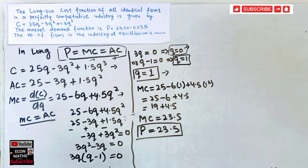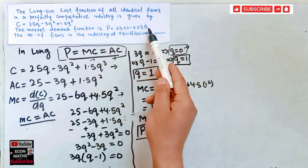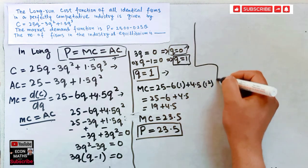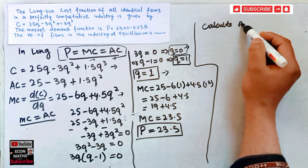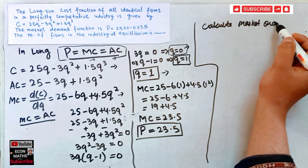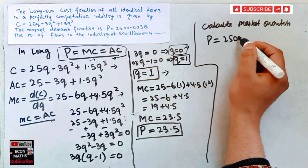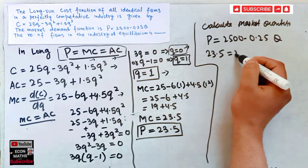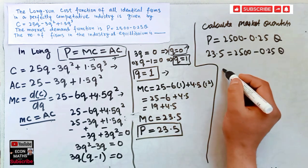The individual quantity supplied by a firm is 1. Now we will calculate the market demand. We solve the demand function for Q, knowing that P = 23.5. Our demand function is P = 2500 − 0.25Q. Inserting P = 23.5: 23.5 = 2500 − 0.25Q.